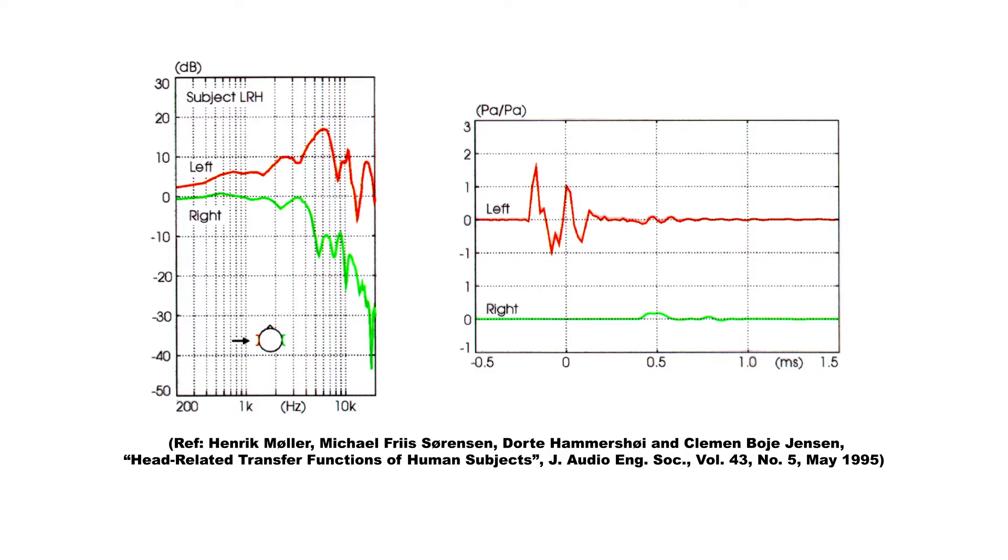In an HRTF, this is represented by a difference of at least 6 dB between ears above 1 kHz. So, we can think of an HRTF as a virtual dummy head. Having applied an HRTF, we obtain a simulated binaural room impulse response.